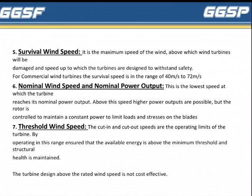Above the nominal wind speed, higher power outputs are possible, but the rotor is controlled to maintain constant power to limit loads and stresses on the blades. Seventh is Threshold Wind Speed. The cut-in and cut-out speeds are the operating limits of the turbine; operating in this range ensures that the available energy is above the minimum threshold and structural health is maintained. Turbine design above the rated wind speed is not cost-effective.